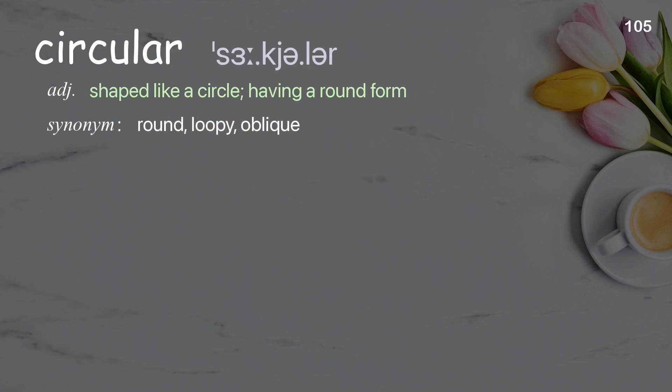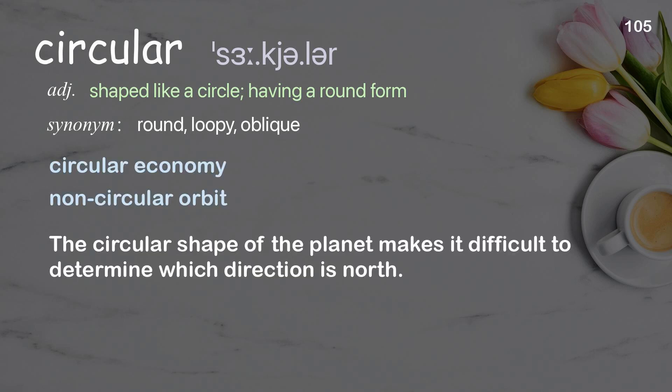Circular: shaped like a circle, having a round form. Examples: circular economy, non-circular orbit. The circular shape of the planet makes it difficult to determine which direction is north.